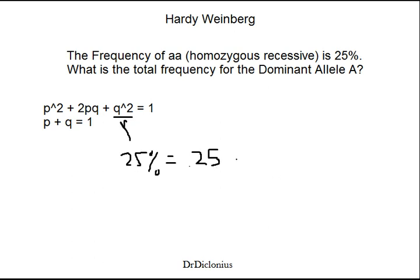If 0.25 equals Q squared, then Q, by square rooting both sides, is equal to 0.5.